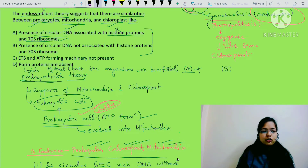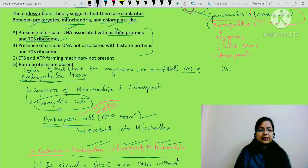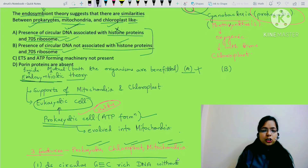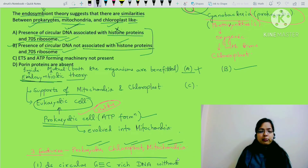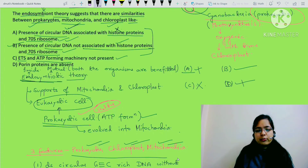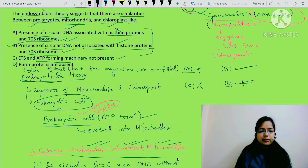Option B is: presence of circular DNA not associated with histone proteins and 70S ribosome. Yes - circular DNA is present, not associated with histone proteins, and 70S ribosome is also present. So B is the correct option. Option C says ETS and ATP forming machinery not present - incorrect, they are present. Option D says porin proteins are absent - no, porin proteins are present in outer membrane. So the correct answer is B.